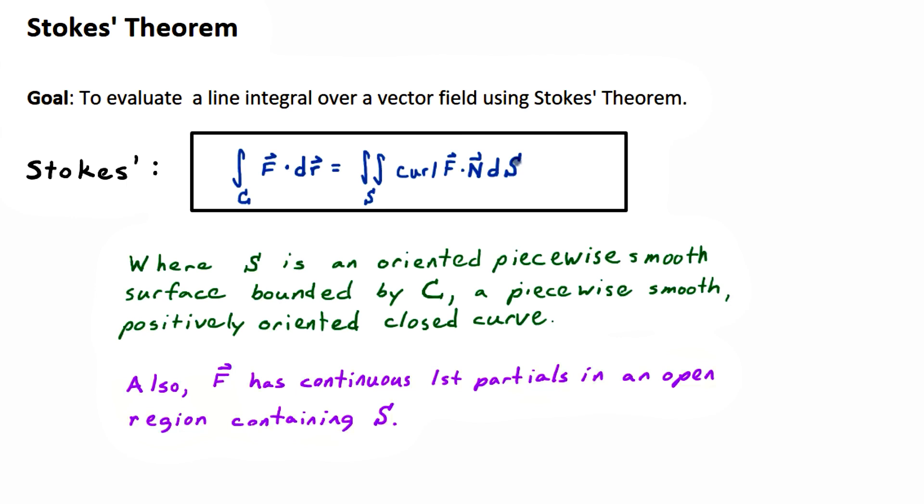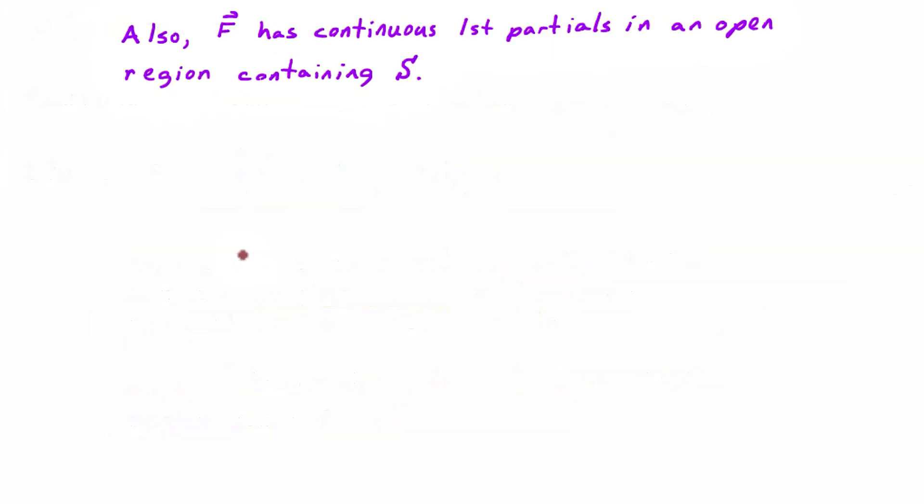So what is the part that says S is bounded by C? What could that possibly mean? It's a picture, so let's say you have a hill. I often draw my surface as a hill, but it could be a depression, it doesn't matter.